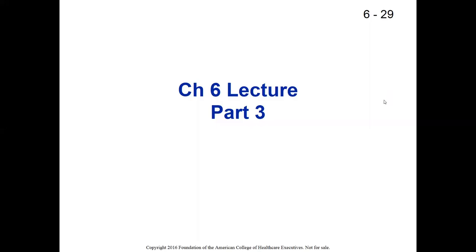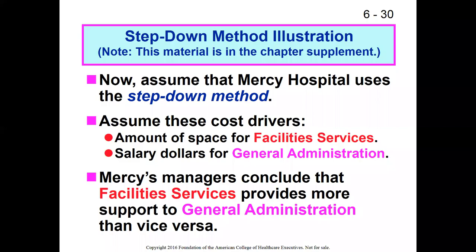This lecture concludes a three-part lecture series based on Chapter 6 of Gapinski's Health Care Finance. In Part 1, I introduced cost allocation and talked about two different methods. The first method was the direct method, and now we'll be doing the second method, the step-down method. We'll be building off the nominal organization, Mercy Hospital, and assuming they use the step-down method.